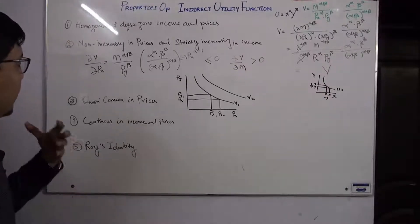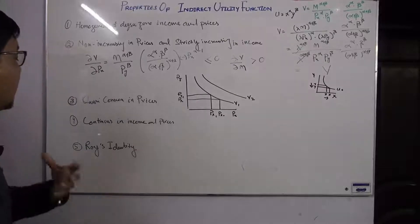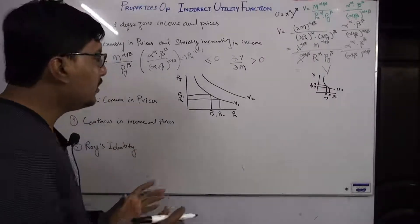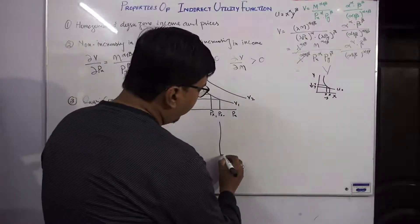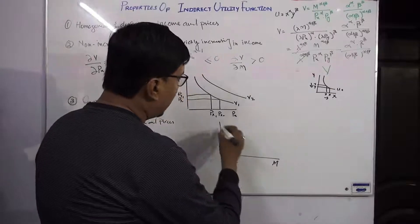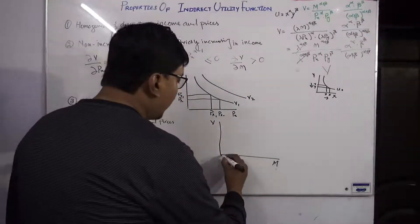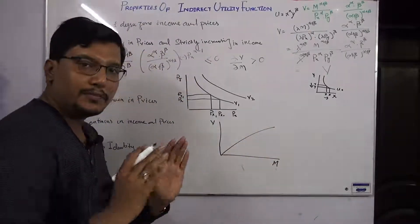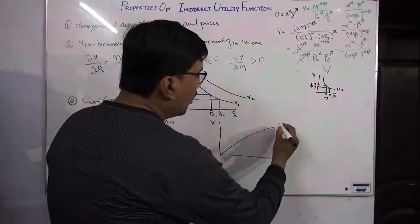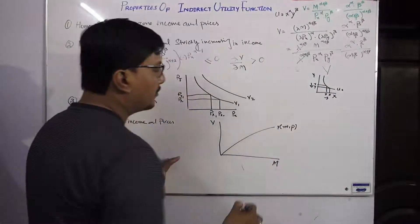The fourth property is that the indirect utility function is continuous in income and prices. This means if we have the indirect utility function as a function of income, it will be a continuous function with no discrete jumps or discrete portions. The function changes smoothly as income and prices vary.